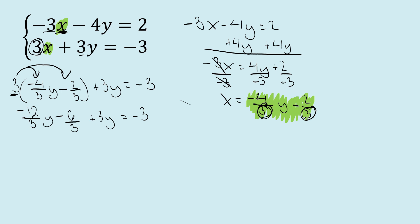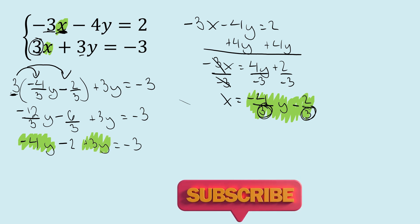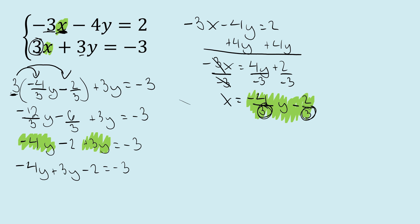Let's divide out. We get negative 4y minus 2 plus 3y equals negative 3. Now let's combine our like terms. So our like terms are here and here.